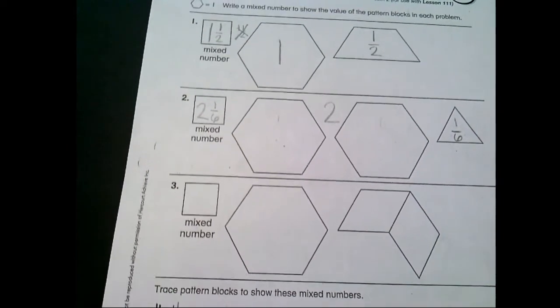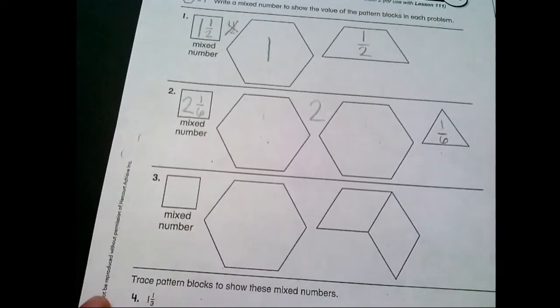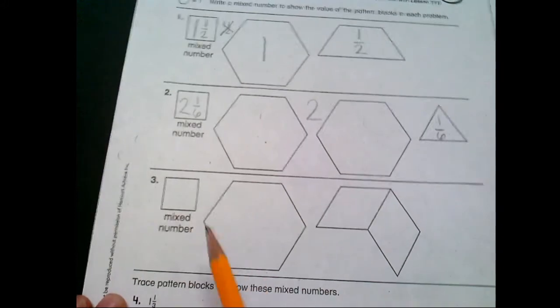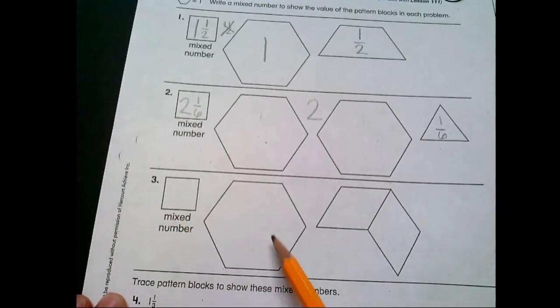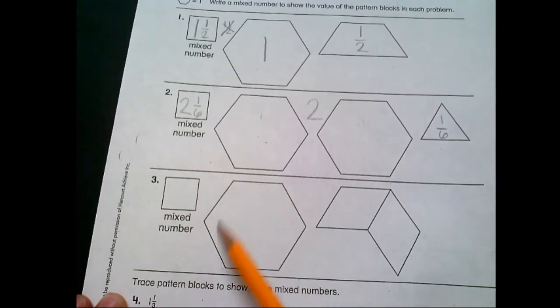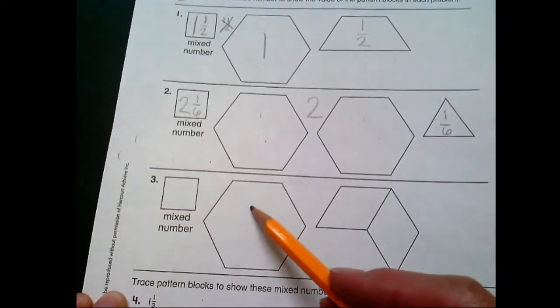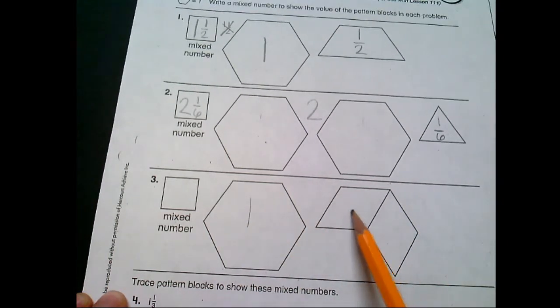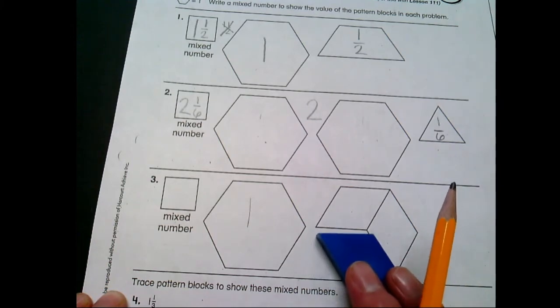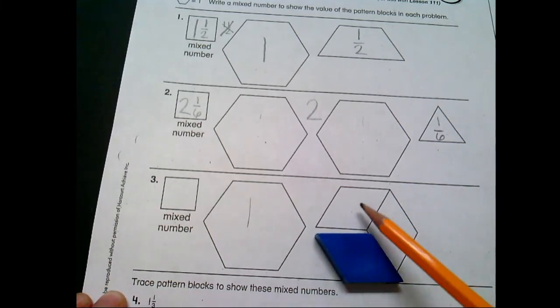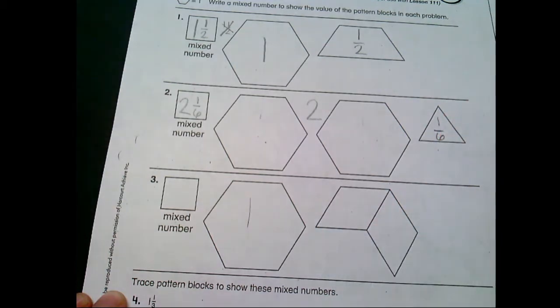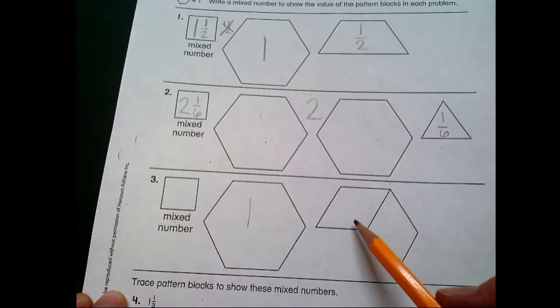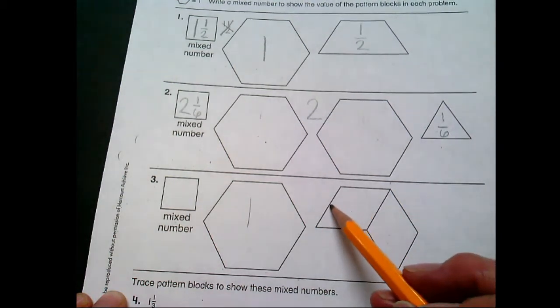All right, let me slide my paper up here a little bit. Let's see, trying to adjust it so you can see better. I feel like my numbers aren't showing up very well. Let's take a look at number three. How many hexagons do we have? Just one hexagon. We've got two parallelograms here. You remember how many parallelograms it takes to make a hexagon? Three. One, two, three.